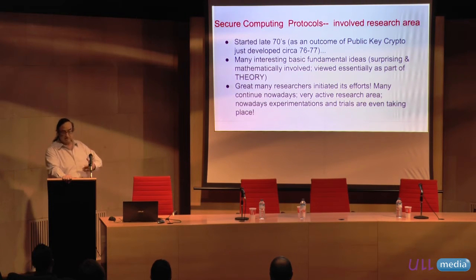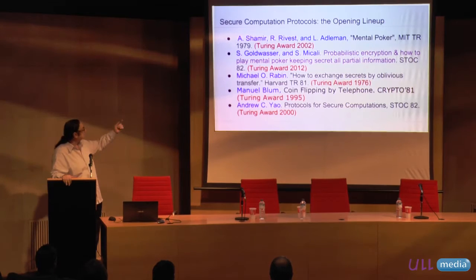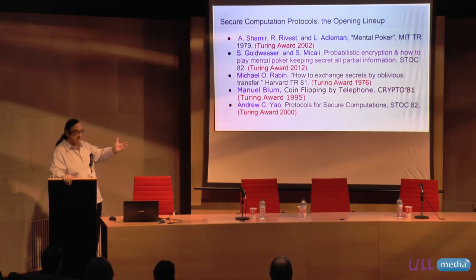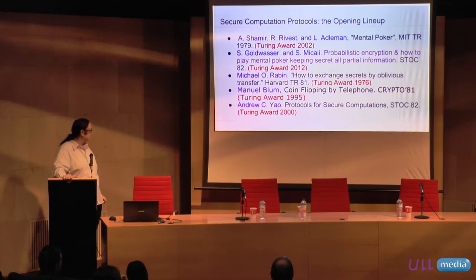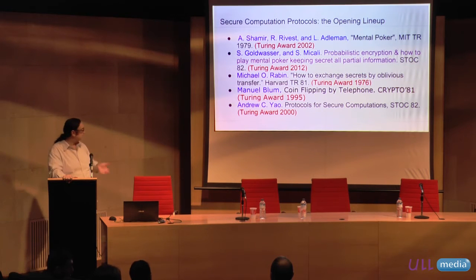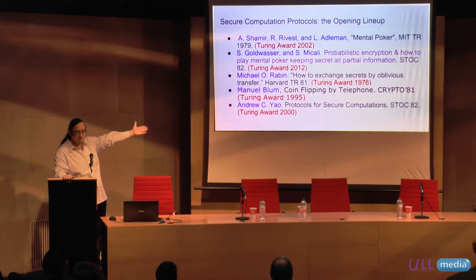Very surprising results emerged: you can play mental poker over the net, you can flip a coin over the net. It started with simple protocols like the mental poker protocol in 1979, then another in 1982, then oblivious transfer — a very simple protocol where you send mail and maybe the other party gets it, maybe not, and you don't know the result. Then coin flipping by telephone and secure computation like the millionaire problem. You look at these early papers and they look like puzzles — recreational mathematics — but you look at the authors and you see they all went on to do great things, so something is serious about this area.